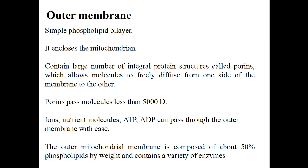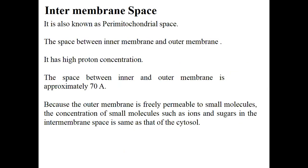Porins help the movement of different molecules by diffusion from one side of the outer membrane to the other, allowing beneficial components from the cytosol to enter the mitochondria. Porins pass molecules with a molecular weight of less than 5000 daltons — including ions, nutrient molecules, and ATP. The outer membrane is composed of 50 percent phospholipids by weight and contains a variety of enzymes that help with specific metabolic functions.